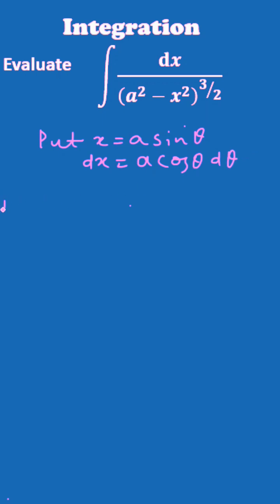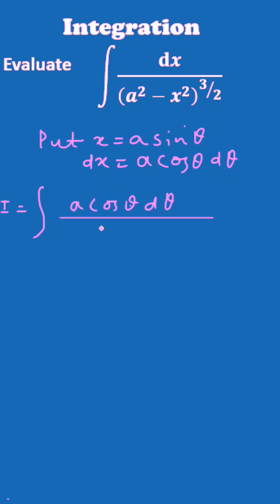So your problem becomes: I equal to the integral of — replacing the value of dx by a cos θ dθ — divided by a² minus a² sin² θ, whole to the power 3/2.